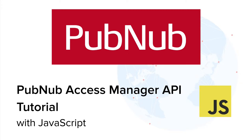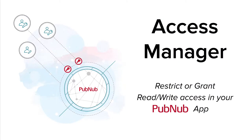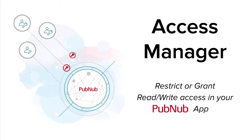Hey everyone, today I'm going to show you how PubNub's Access Manager API works with JavaScript. Access Manager enables restriction for message reading and writing on PubNub. PubNub developers can restrict the flow of messages at the key level, on a channel level, or for specific access tokens.